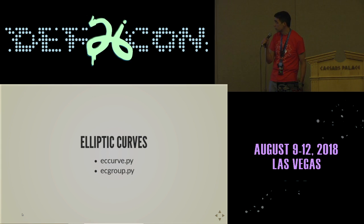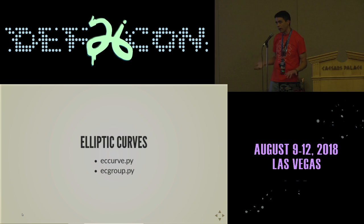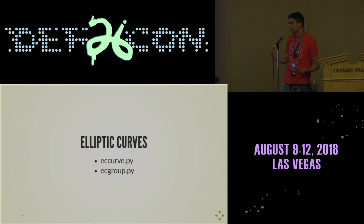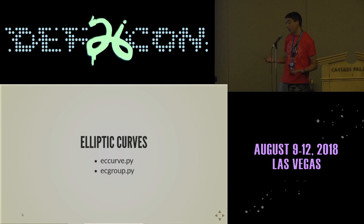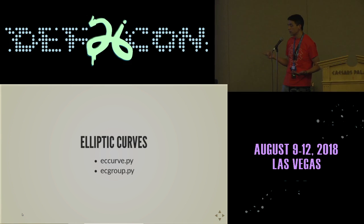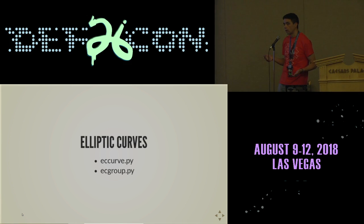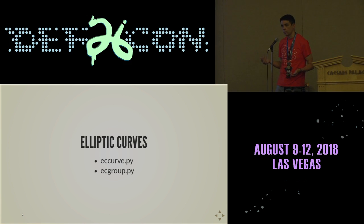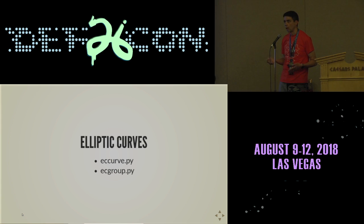For elliptic curves: both elliptic curves and pairing groups are elliptic curves, but these elliptic curves are more the standard curves. I believe they include the standard NIST curves.